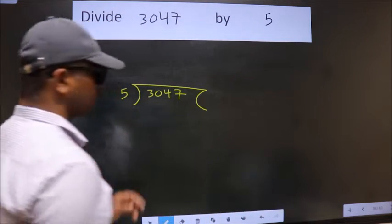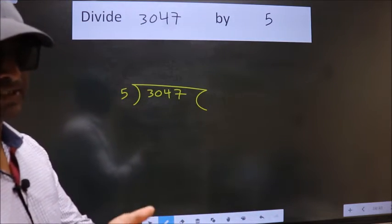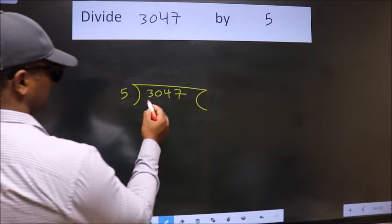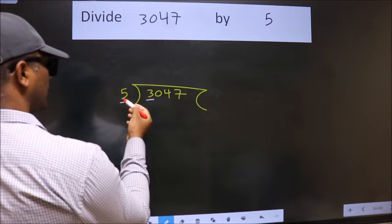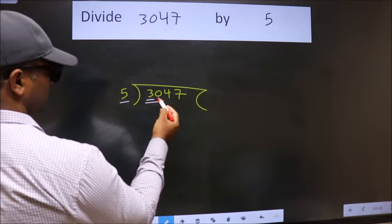This is your step 1. Next, here we have 3, here 5. 3 is smaller than 5, so we should take two numbers, 30.